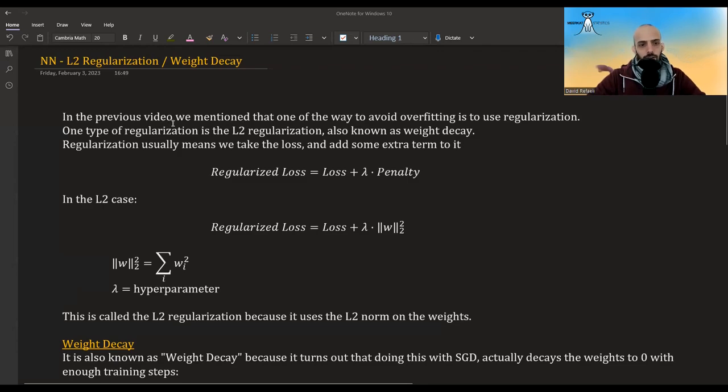One type of regularization is the L2. Regularization usually means taking your original loss and adding some penalty term to it. To balance the original loss and the penalty, we add some hyperparameter. The bigger that is, the bigger the penalty weighs in the overall loss, and the smaller it is,